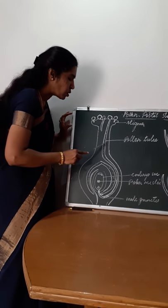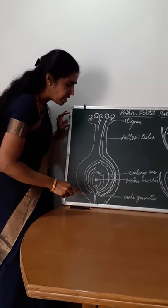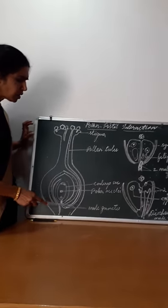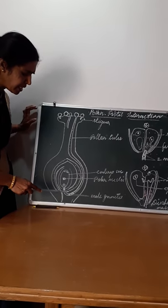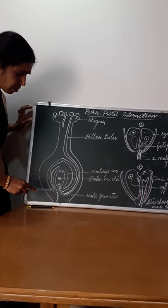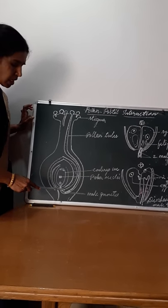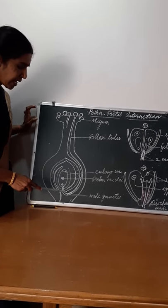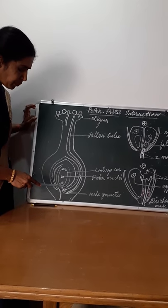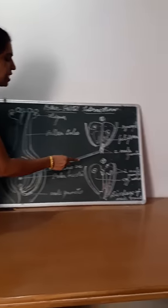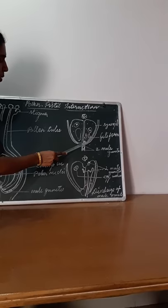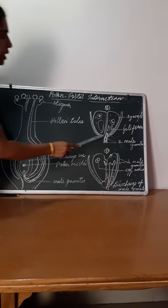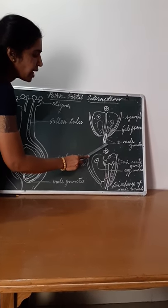When it grows, the generative cell divides and gives rise to two male gametes. When the pollen tube reaches the micropylar end, what are the structures which guide the pollen tube entry? When the pollen tube reaches the micropylar end of the ovule or female gametophyte, it carries two male gametes.